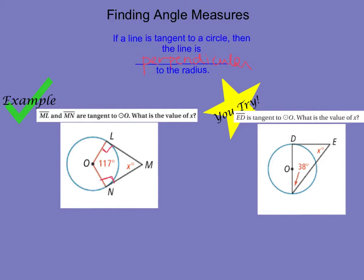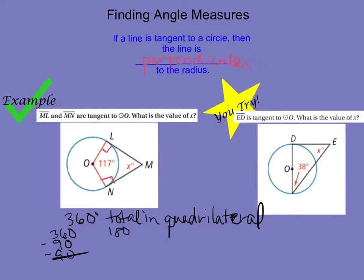Now here, I have a quadrilateral. And I know that inside any quadrilateral, all of the angles are going to add up to 360 degrees. So I'm going to take 360 minus 90 minus 90, because that's these two angles here. That gives me 180. Now that I'm at 180, I'm going to subtract 117, which leaves me with my value of x, which is 63 degrees.